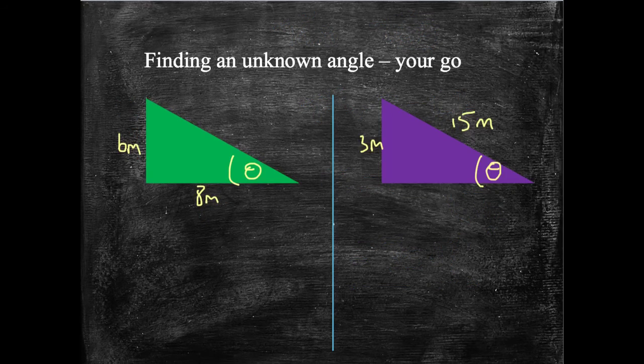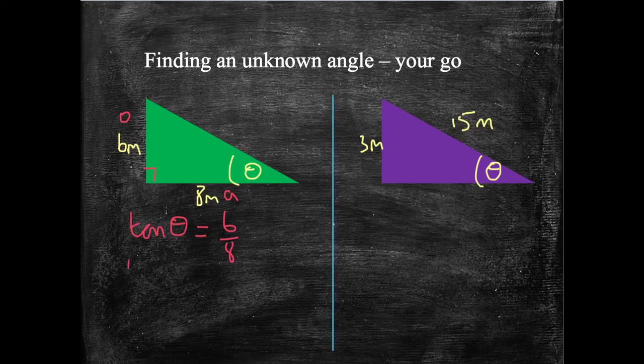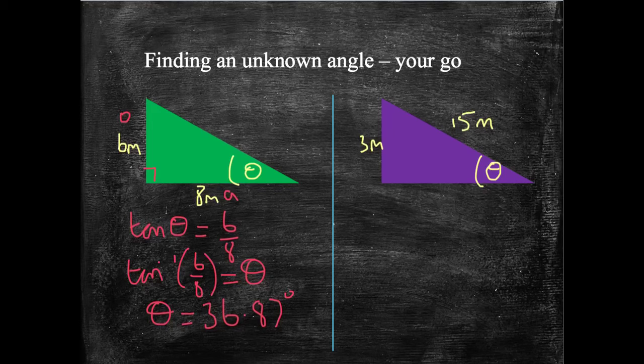By now, you should be ready to have a go at these two. Pause the video, and I'll go through it in a second when you're ready. This first example, here's my right angle. We've got the opposite over here and we've got the adjacent over here. So tan theta equals 6 over 8. Tan to the minus 1 of 6 over 8 will tell me what theta is. Do that on my calculator, shift tan to get tan to the minus 1, 6 divided by 8, close my bracket, equals 36.87 to the nearest two decimal places. So 36.87 degrees.